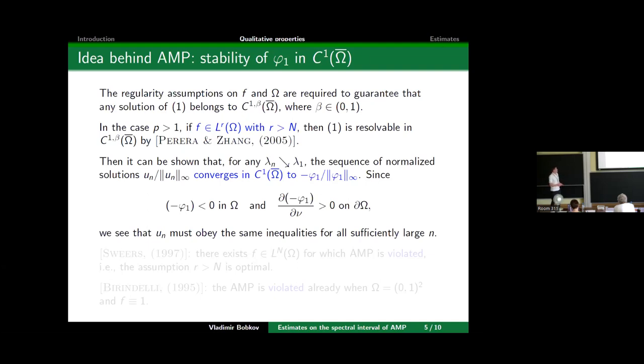What's next? The story is the following: let us take any sequence of λs which converge to λ₁ from the left, and we consider the sequence of normalized solutions over the L^∞ norm. It can be shown that this sequence converges in this space to minus φ₁, properly normalized—minus the first eigenfunction. Since minus the first eigenfunction is strictly negative and satisfies the boundary point lemma, and because we converge in that space, the same inequalities must be satisfied by u_m with sufficiently large m. That is the story, basically.